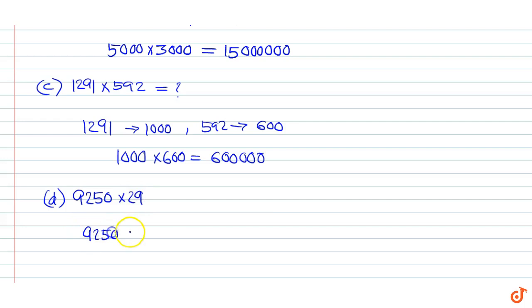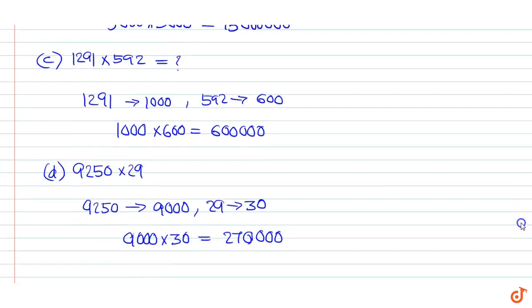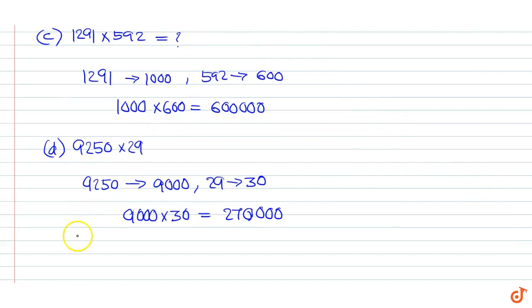9250 can be rounded off to 9000. 29 can be rounded off to 30. So the product is 9000 x 30 which equals 270,000.